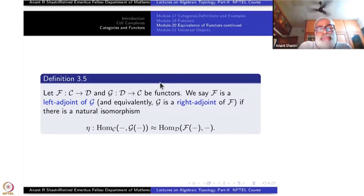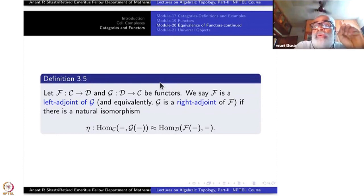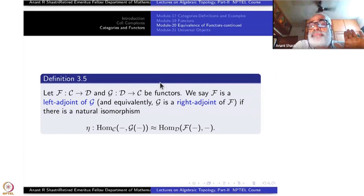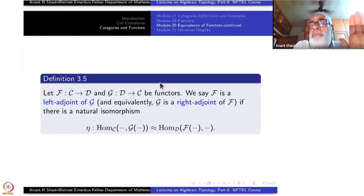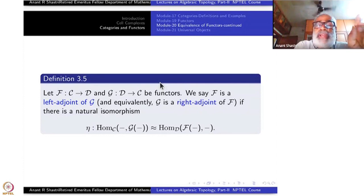So F from C to D, G from D to C — these two are functors. I am taking only covariant functors. For contravariant functors there is exactly the same kind of definition and result, but you have to reverse the arrows. We say F is left adjoint to G and simultaneously G is right adjoint to F. When alpha composite beta is identity, beta is the right inverse and alpha is the left inverse — it is like that.